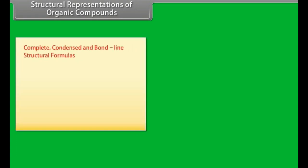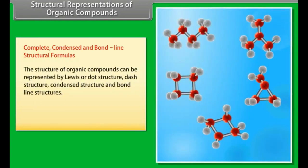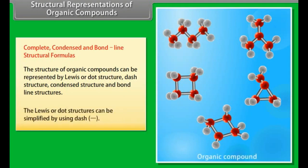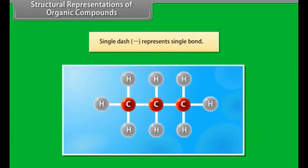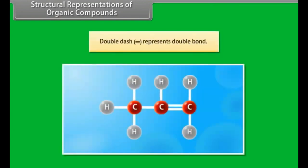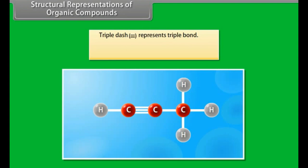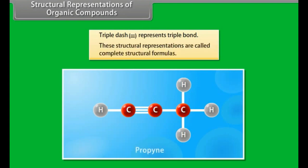Structural representations of organic compounds — complete, condensed and bond line structural formulas. The structure of organic compounds can be represented by Lewis or dot structure, dash structure, condensed structure, and bond line structures. The Lewis or dot structures can be simplified by using dashes: a single dash represents a single bond (e.g., propane), a double dash represents a double bond (e.g., propene), and a triple dash represents a triple bond (e.g., propyne). These structural representations are called complete structural formulas.